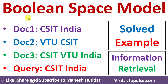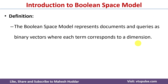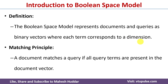Welcome back. In this video I will discuss how to retrieve documents based on a query using the boolean space model with a simple example. The boolean space model represents documents and queries as binary vectors where each term corresponds to a dimension. A document matches a query if all query terms are present in the document vector.